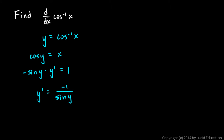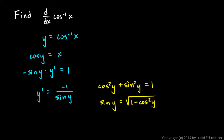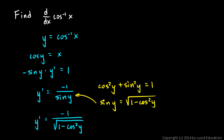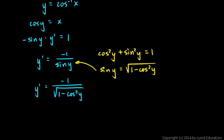The appropriate trig identity is cosine squared y plus sine squared y equals 1. Solving for sine y gives the square root of 1 minus cosine squared y. Substituting in, y prime equals negative 1 over the square root of 1 minus cosine squared y. Since cosine y equals x, that becomes negative 1 over the square root of 1 minus x squared.